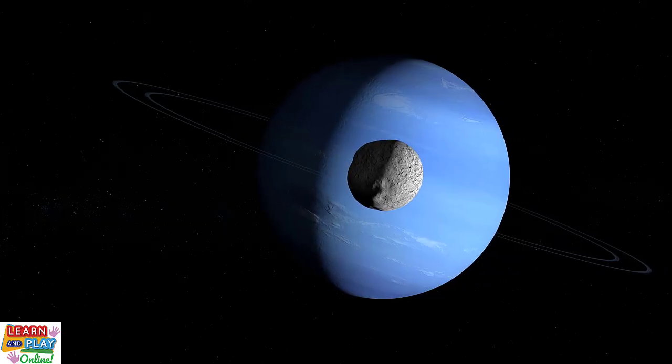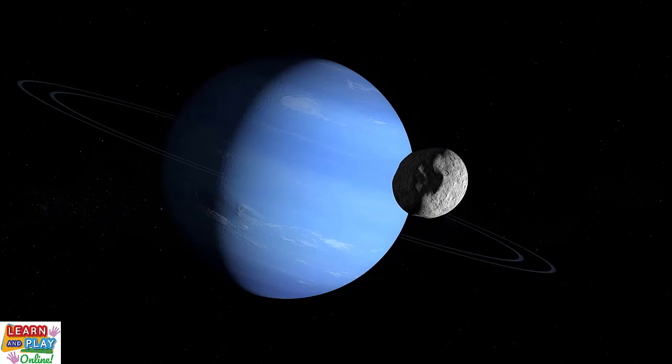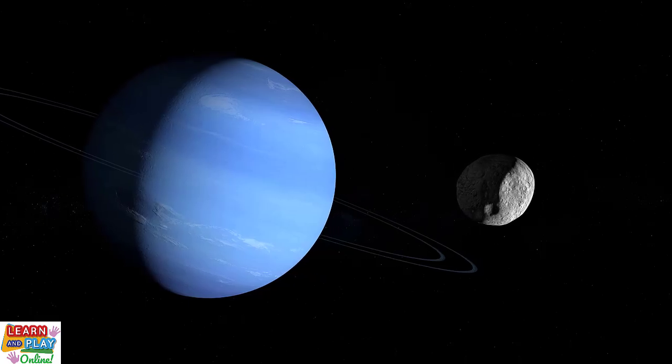As far as we know, Neptune has five main rings and four ring arcs. They are made up of mostly dust and small rocks. It is difficult to see Neptune's rings as they appear dark and are faint.